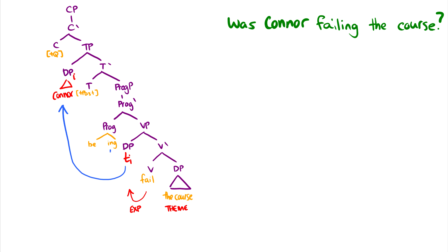So this ING moves down to failing. So we get the morphology failing there. So that moves. B moves up to T to get past tense. So now this is was. And then it moves further up to C because it has plus Q. And then we end up with was Connor failing the course.